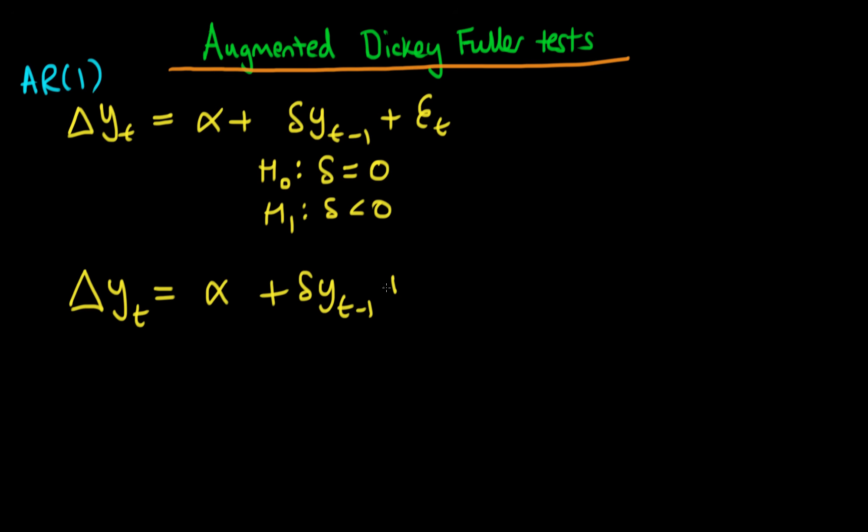It turns out the correct thing to do is actually to include another term, which is a lagged delta term, so Δy_{t-1} plus ε_t. Under the null hypothesis that we have a unit root in an AR2 process, we can prove that delta should equal 0.